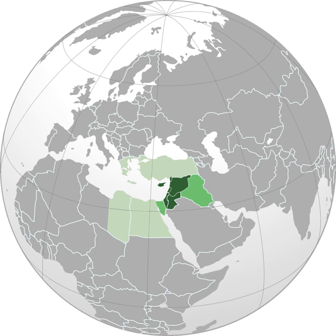The Levant is an approximate historical geographical term referring to a large area in the eastern Mediterranean, primarily in western Asia. In its narrowest sense, it is equivalent to the historical region of Syria. In its widest historical sense, the Levant included all of the eastern Mediterranean with its islands — all of the countries along the eastern Mediterranean shores, extending from Greece to Cyrenaica.